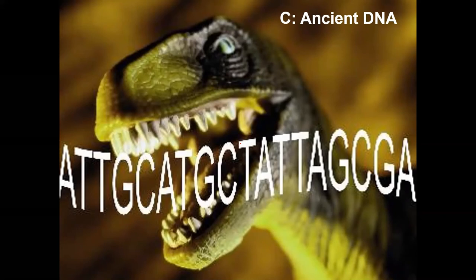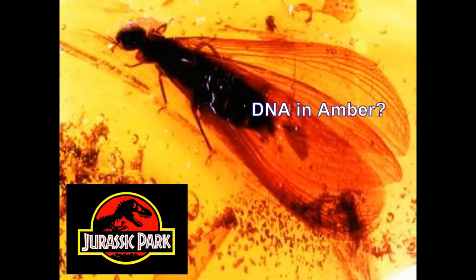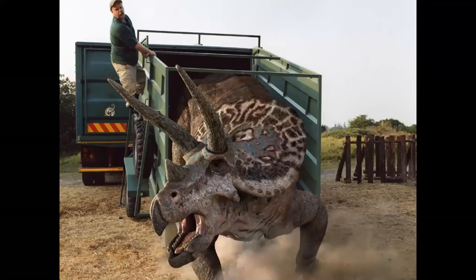PCR can also be used for ancient or archaeological DNA. Jurassic Park imagined insects preserved in amber with dinosaur blood in their guts — could we get dinosaurs? Probably not. DNA seems to break down over time, lasting maybe 50,000 to 100,000 years maximum. We have a few fragments of dinosaur DNA but not enough to reconstruct them. But we do have much newer samples that are very fascinating.